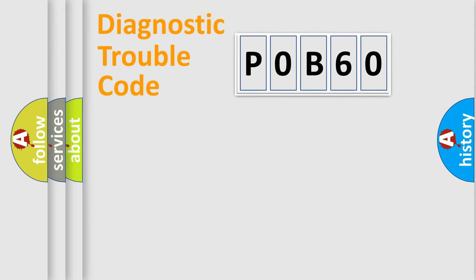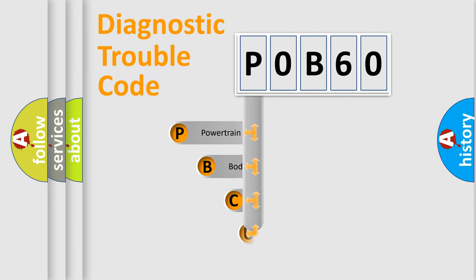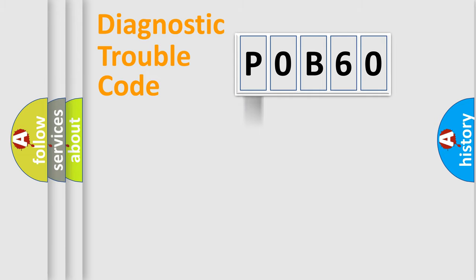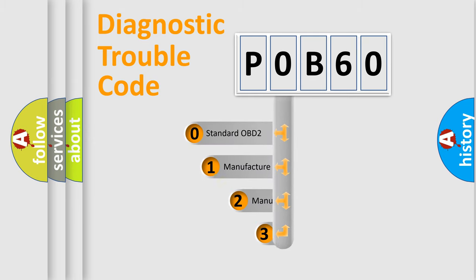First, let's look at the history of diagnostic fault code composition according to the OBD2 protocol, which is unified for all automakers since 2000. We divide the electric system of an automobile into four basic units: Powertrain, Body, Chassis, and Network. This distribution is defined in the first character of the code.